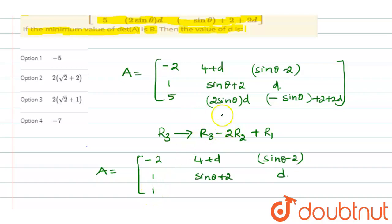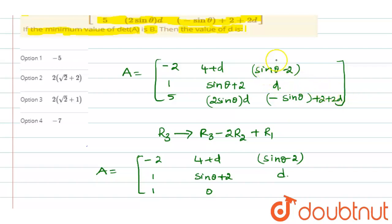For R3, the second element: 2 sine D minus 2 sine θ minus 2 plus 4 plus D. The third element of R3: minus sine θ plus 2 plus 2D, minus of minus 2D — 2D gets cancelled, plus sine θ minus sine θ gets cancelled, minus 2 plus 2 gets cancelled, so that element equals 0.